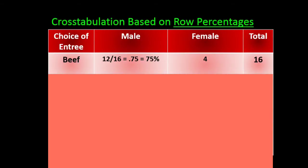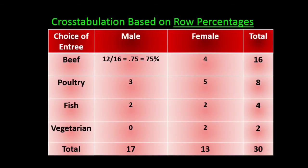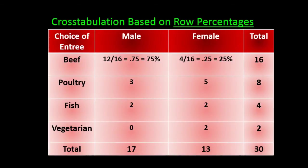We are just looking at beef entrees when we calculate a row percentage because the row is beef entrees. So if 75 percent of the beef entrees were ordered by males, what percent were ordered by females? Logically it should be 25 percent, because if 75 percent were ordered by males, then the females account for the remaining 25 percent. And indeed, 4 divided by 16 is 0.25, or 25 percent.